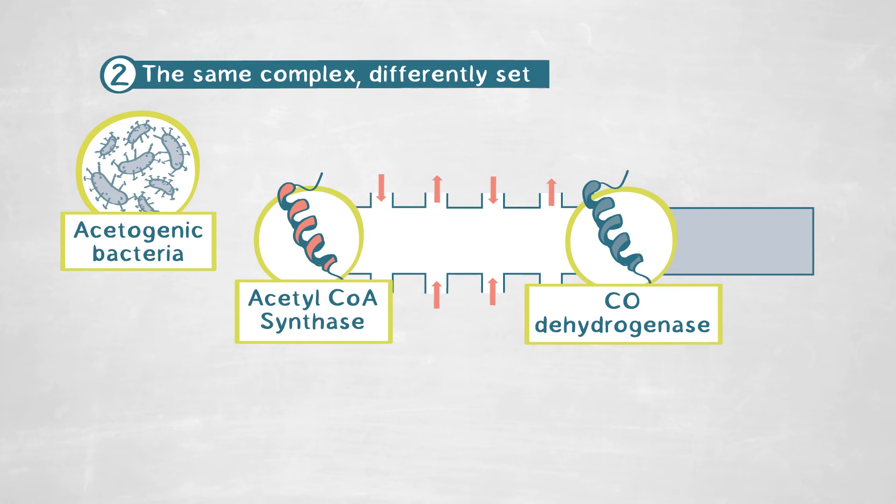Which led us to conclude that these organisms should have this kind of system just to maximize the carbon monoxide diffusion to both proteins of the complex. And then the external carbon monoxide could be directly diffused to both proteins, to be reduced by the CO dehydrogenase, making energy out of it, and to be used by the acetyl-CoA synthase for acetate production.